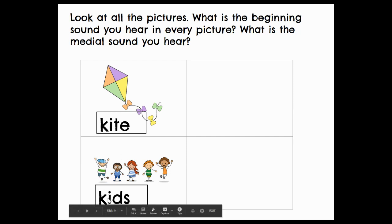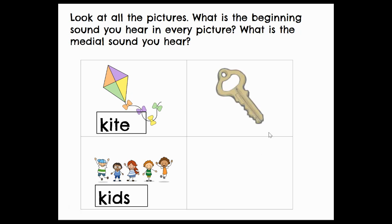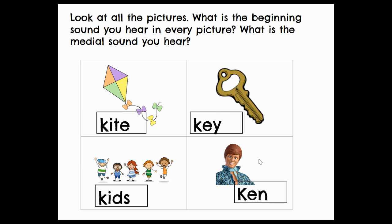But they both are made with an I. Let's keep going. Key. How do we spell key? K-E. Oh, it's made with the letter K. Do you see that? Ken. Ken. Ken is also made with the letter K. All right.